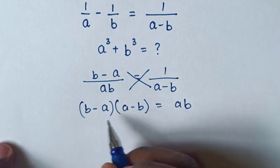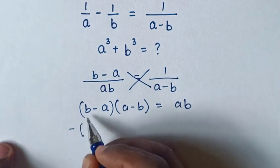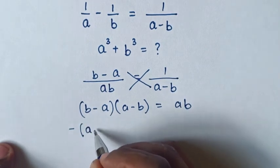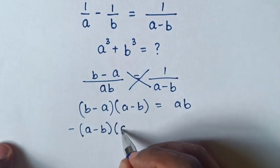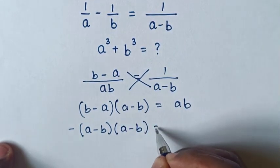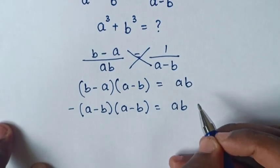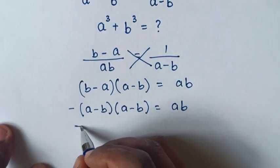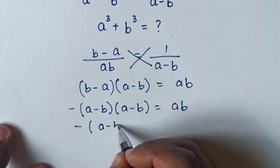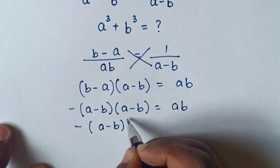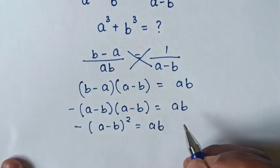We can see b minus a times a minus b. For this to have the same a minus b, it will be negative bracket a minus b times a minus b is equal to ab. So it will be negative bracket a minus b squared is equal to ab.